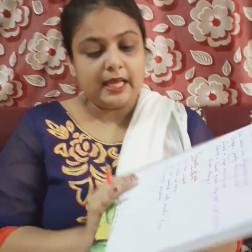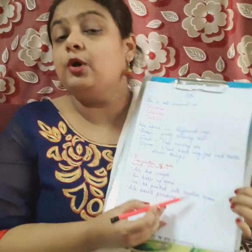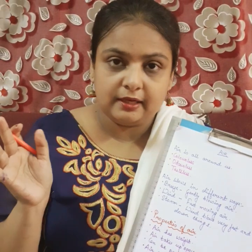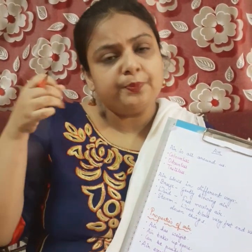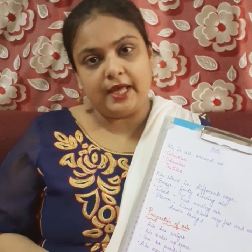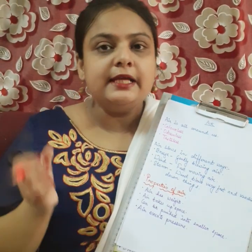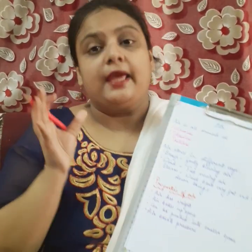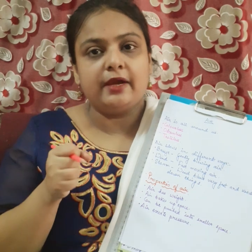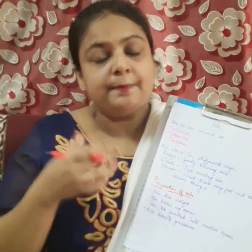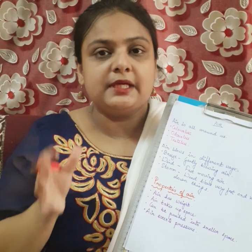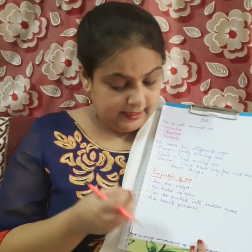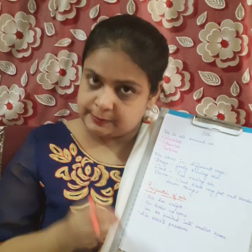Now the third property is that air can be pushed into a smaller space. It is very simple — just take a balloon, fill it up with air, and then press it with your hand. When you press it, you will see that the size of the balloon decreases. That is known as compressed air — you are pressing the air into a smaller space, which means you are compressing it. So air can be compressed or pushed into a smaller space.